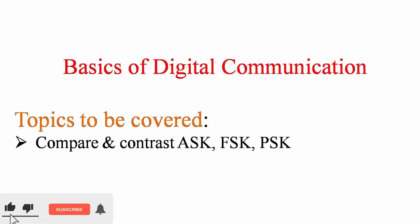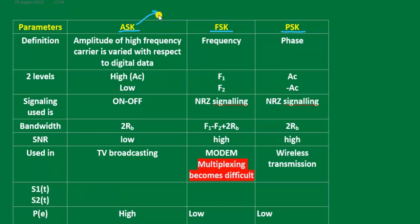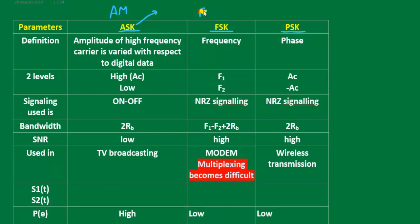In this video, let us revise the basic difference between Amplitude Shift Keying, Frequency Shift Keying, and Phase Shift Keying. In digital communication, the term 'keying' comes from telegraphy, where dot and dash are used. ASK is mapped as analog modulation (AM), FSK is mapped as frequency modulation (FM), and PSK is mapped as phase modulation.